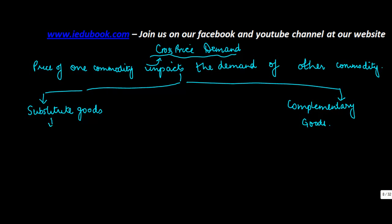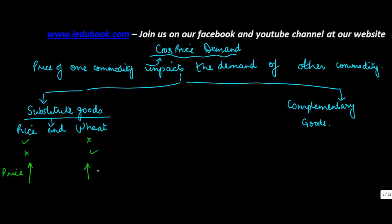Substitute goods, as I've been discussing very often, are like rice and wheat — one can be used instead of the other. In this case, a price rise of one increases the demand for the other, because people tend to buy less of that good and buy more of the other, since one can act as a substitute.